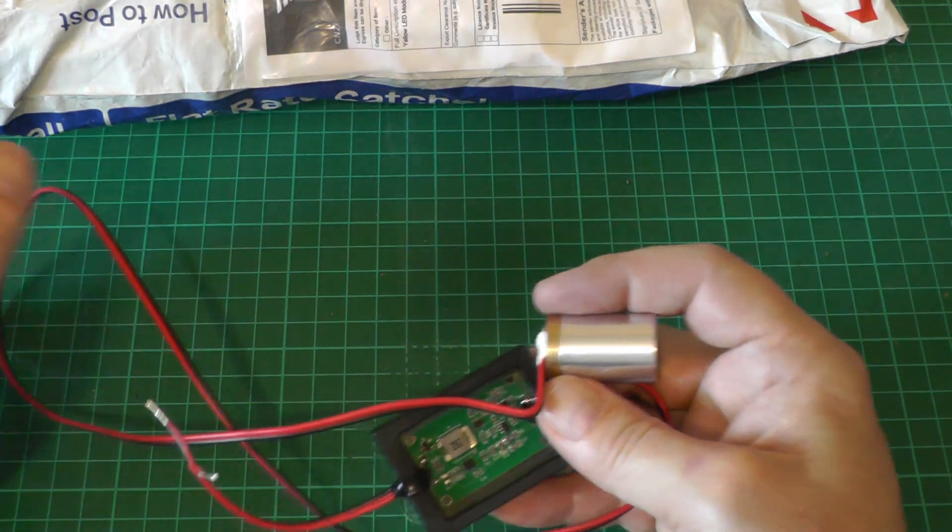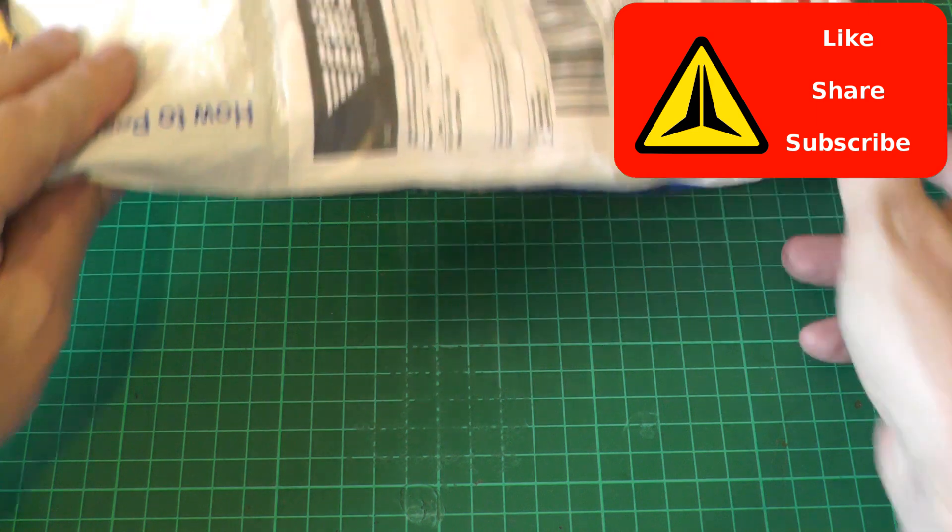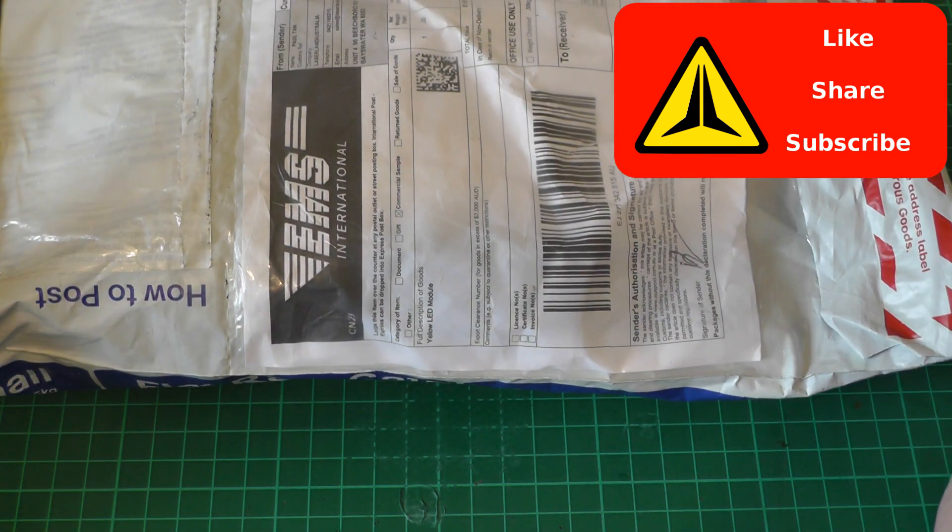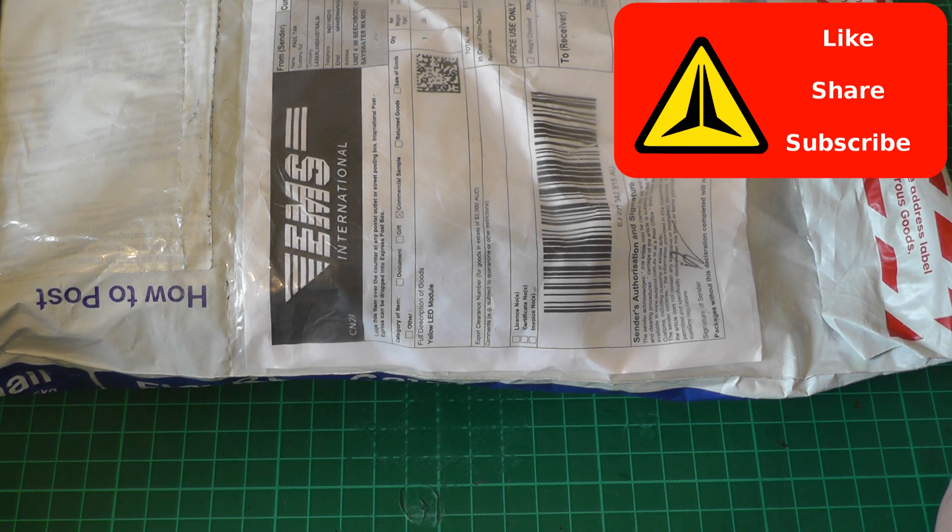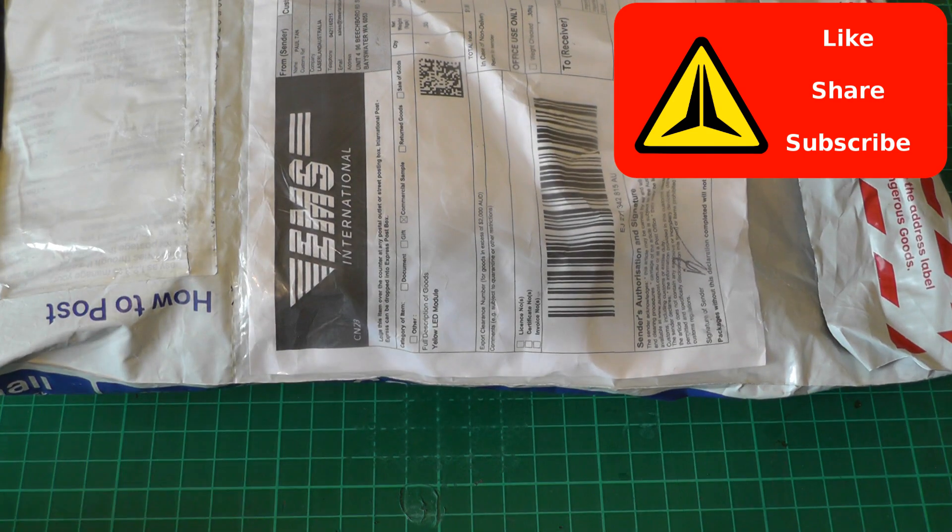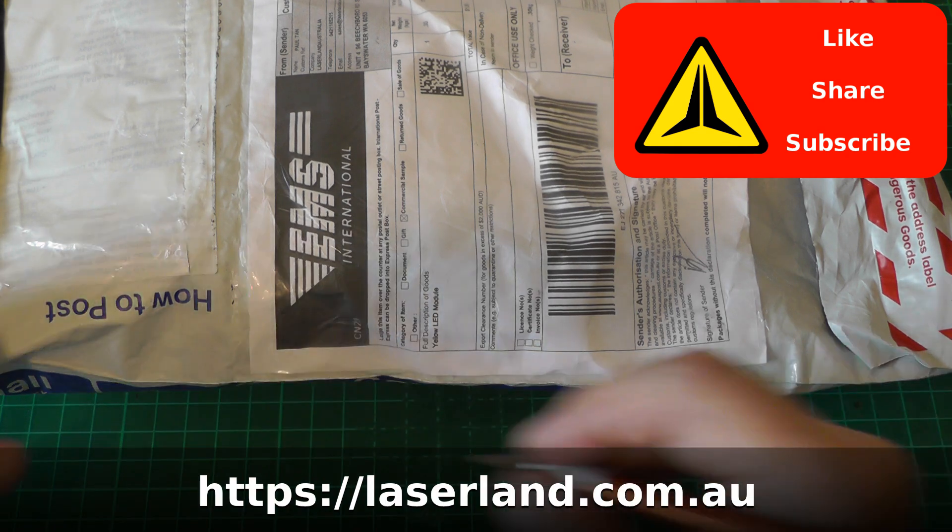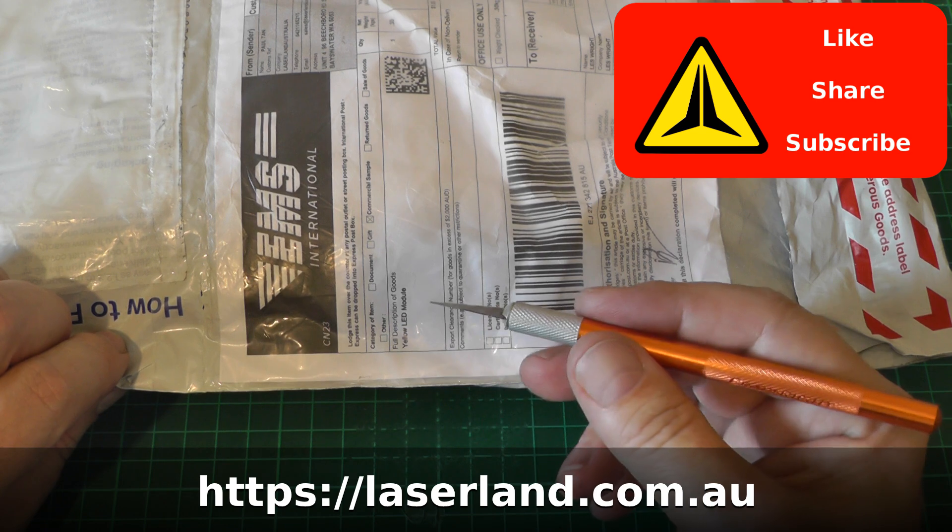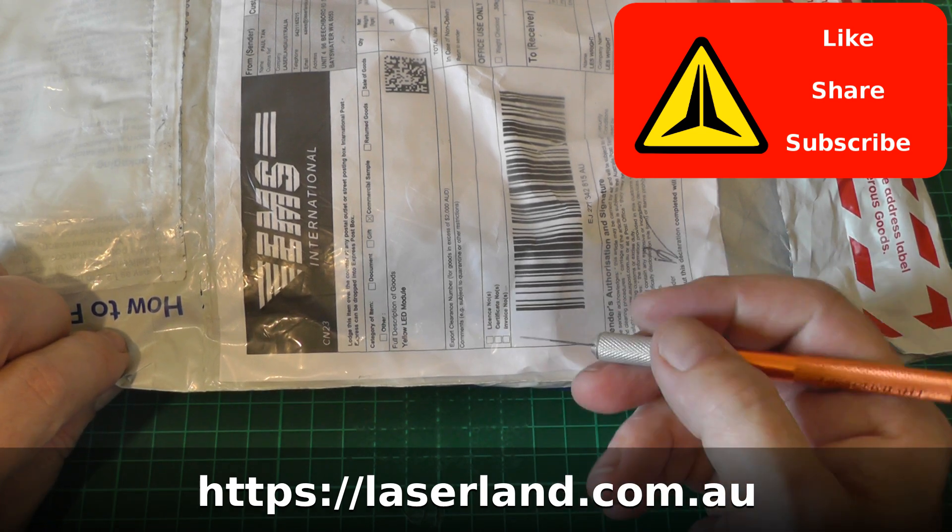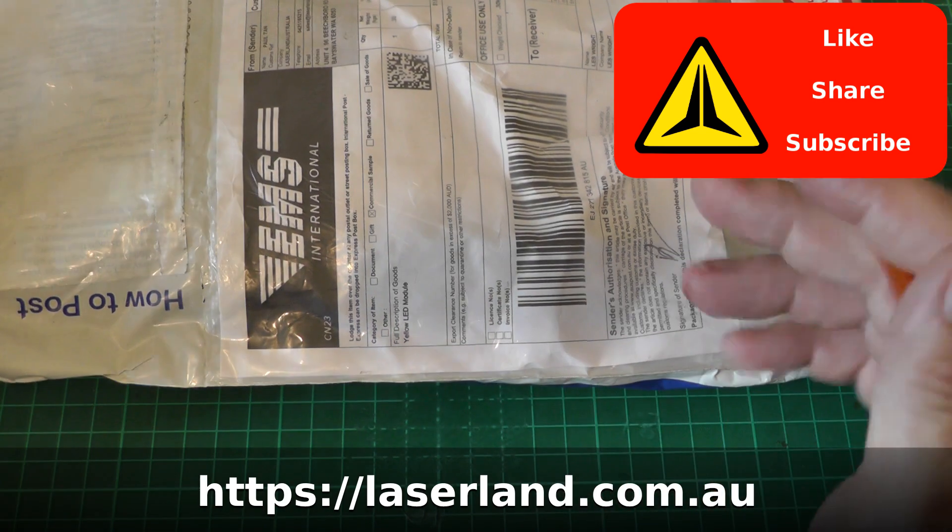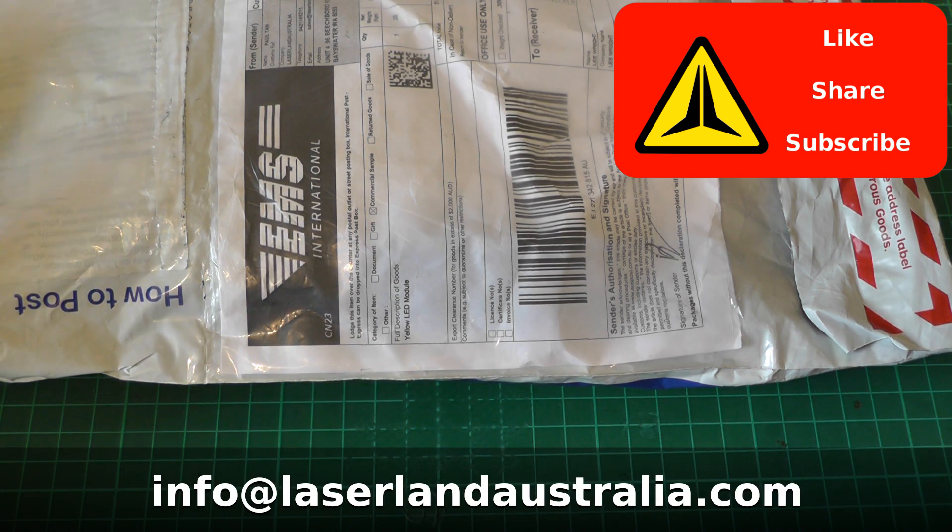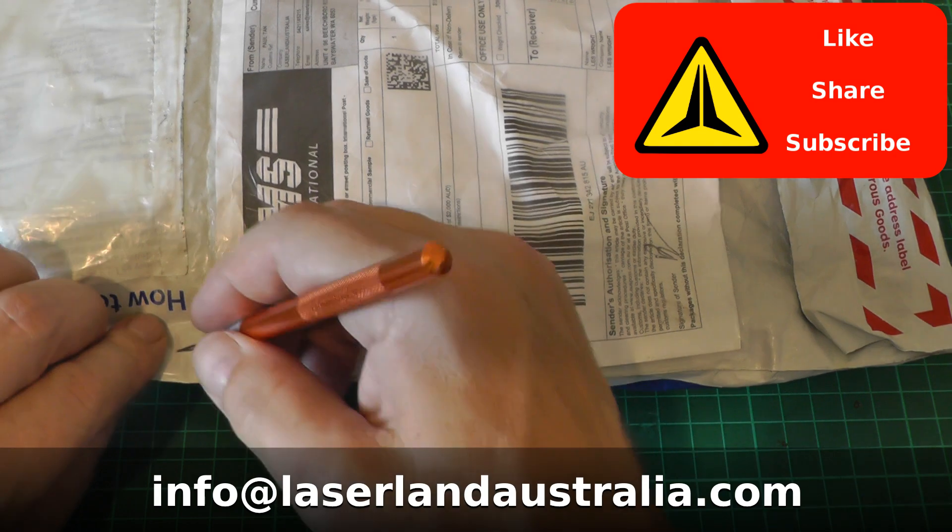At the back of that video, a fellow called Paul from Laserland messaged me and asked if I wanted to review one of his yellow DPSS lasers. This is what's arrived today. I'll link Laserland Australia down below. Again, this is sub-$100. In Australian dollars it's $100, but in US dollars it comes out at about $75. If it is what it says it is, it'll be fantastic.